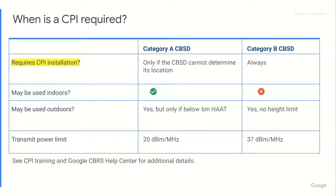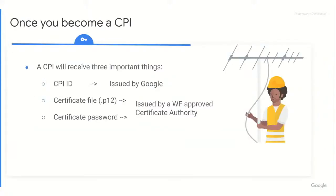That's why CAT B CBSDs have to be signed, examined, validated, and certified by a CPI. If you want more detailed information about the difference between Category A and Category B devices, check out our CPI training materials or the Google CBRS Help Center. Once you become a CPI, you get three very important things. Don't lose these — they are very important.